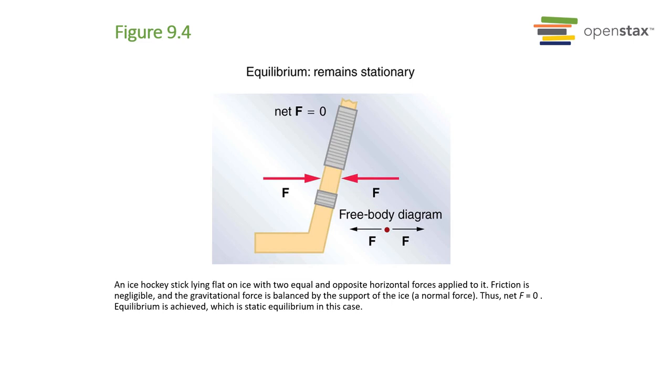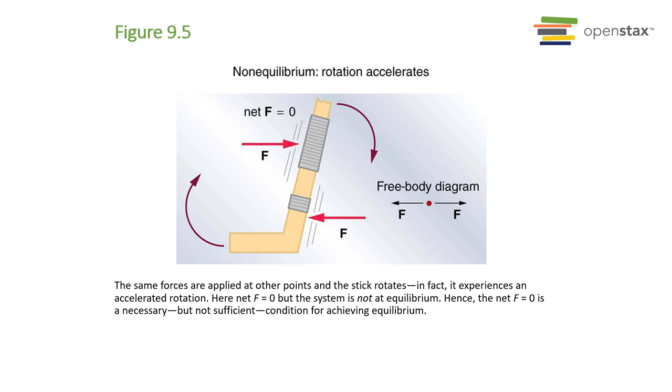This is defined as an equilibrium state. Now in this situation we can have two forces that are identical acting in two different locations, and because they're acting in two different locations, the net result is a rotation.